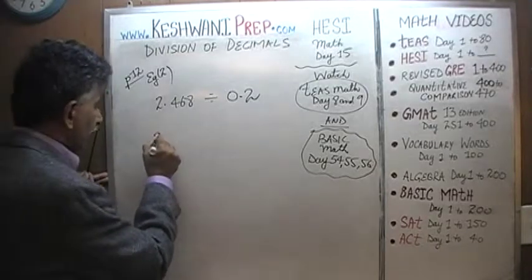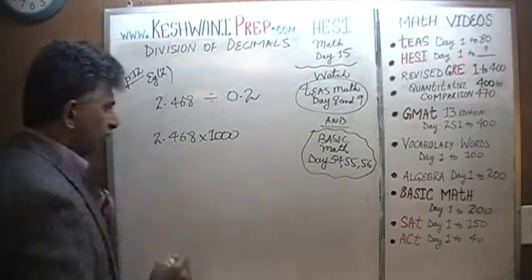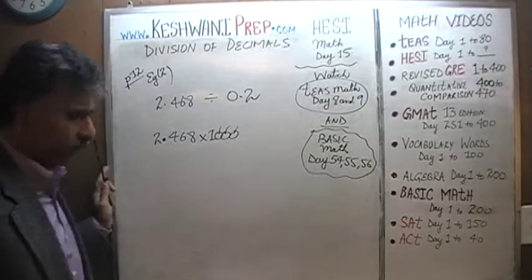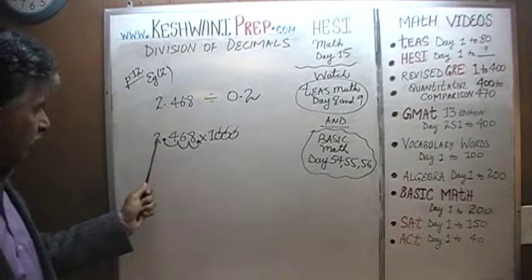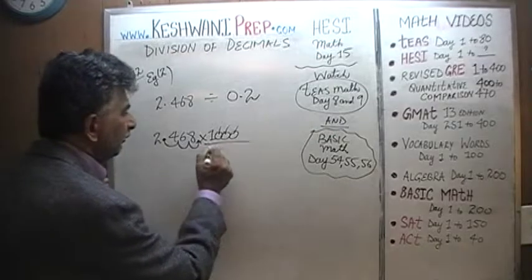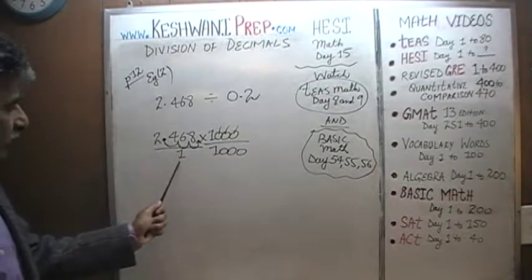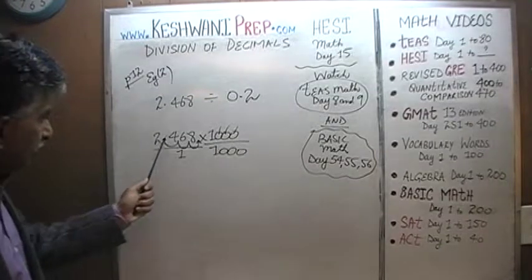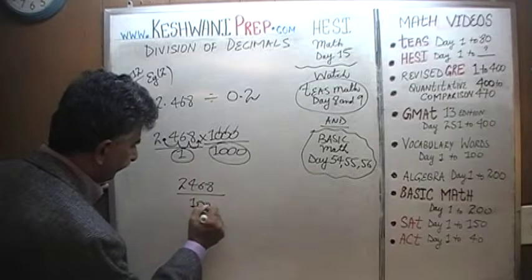Let's look at 2.468 first. If you multiply it by 1,000 — which has 3 zeros — the decimal moves three places and this becomes 2,468, a whole number. We can't just change the top; if we multiply the top by 1,000, we must multiply the bottom by 1,000. Since 2.468 over 1, multiplied by 1,000 over 1,000, equals 2,468 over 1,000, we are not changing anything. Similarly, 0.2 can be written as 2 over 10.